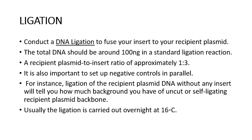Once you do gel purification and confirm the concentration of your DNA, you proceed with the ligation reaction. This ligation reaction is to be performed at a 1:3 ratio — the recipient plasmid is 1 and your insert should be 3 times greater than your recipient plasmid. It is very important to carry out a negative control experiment at the same time, which should not have any insert — only the recipient plasmid along with all other reaction buffers. This ligation is carried out overnight at 16 degrees Celsius.